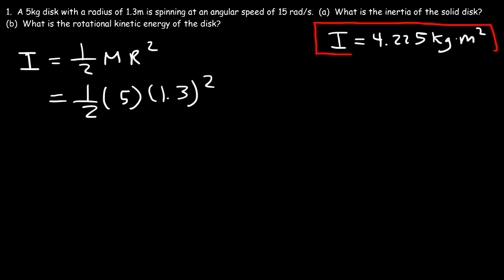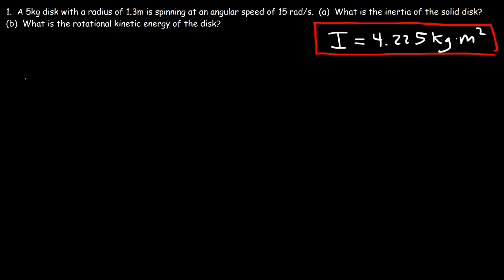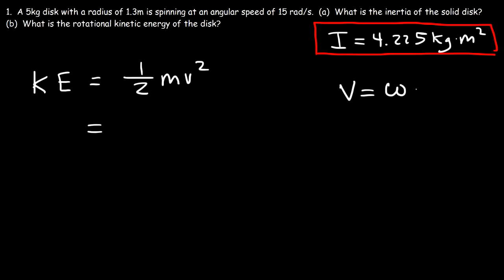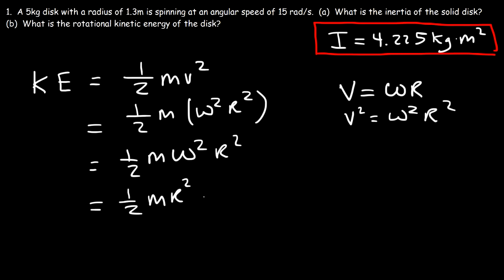Now how can we calculate the rotational kinetic energy of the disk, and how can we derive its equation? First let's start with the expression for kinetic energy which is one half mv squared. Linear velocity is angular velocity times the radius, so let's replace v squared with omega squared r squared. So now we have one half m omega squared r squared, which we can rewrite as one half m r squared times omega squared.